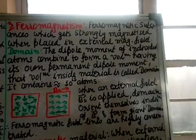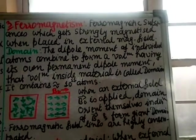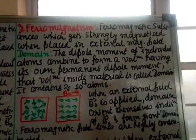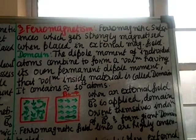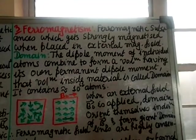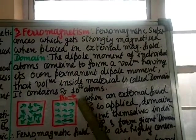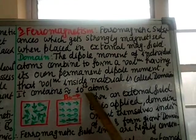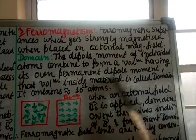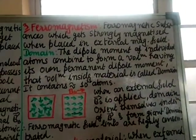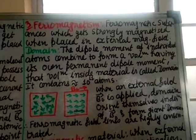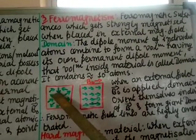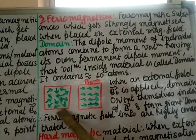Here we will not consider one individual atom, but a group of atoms which form a volume. In that one unit of volume we will get approximately 10 to the power 11 atoms. So all these together form a volume.